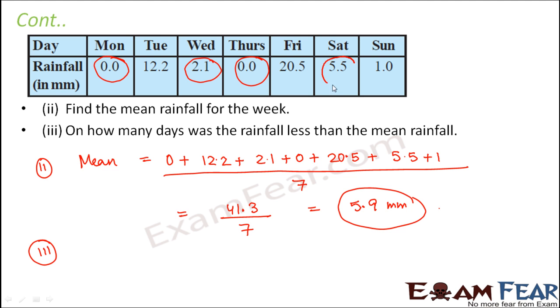Saturday is 5.5, which is less than 5.9. Sunday again is less than 5.9. So therefore on five days of the week, rainfall was less than 5.9 millimeters. And what were those days? Monday, Wednesday, Thursday, Saturday, and Sunday.